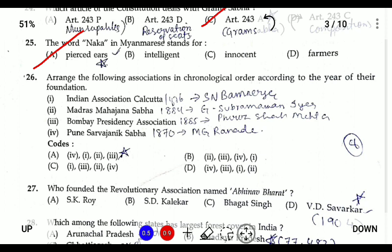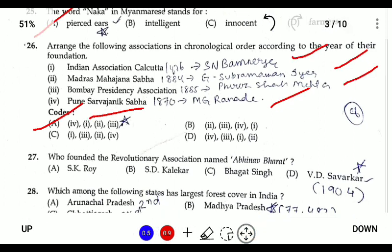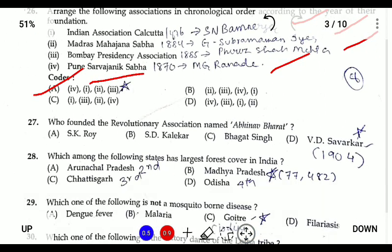Question twenty-six: arrange the following organizations in chronological order. The Indian Association, Calcutta was formed in 1876 by S.N. Banerjee. The Madras Mahajan Sabha was formed in 1884. The Bombay Presidency Association was formed in 1885 by Pherozeshah Mehta. The Poona Sarvajanik Sabha was established in 1870. So the correct chronological order is: Poona Sarvajanik Sabha (1870), Indian Association (1876), Madras Mahajan Sabha (1884), and Bombay Presidency Association (1885). The answer is A.